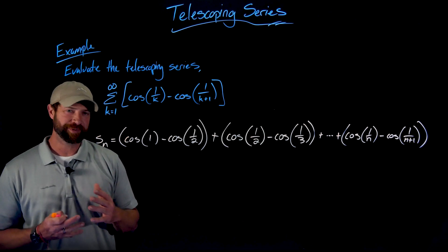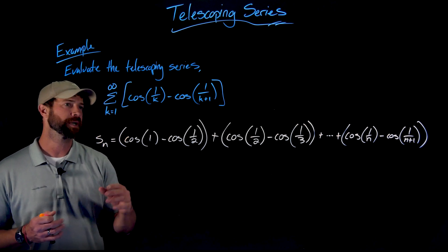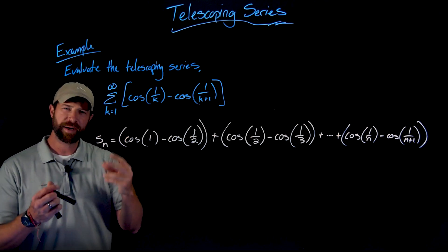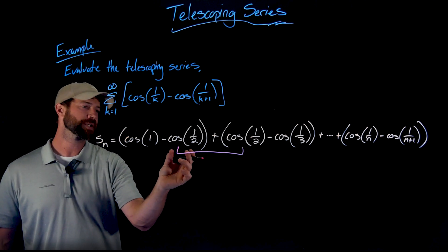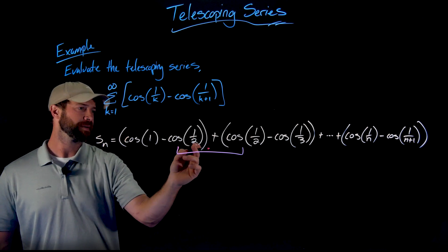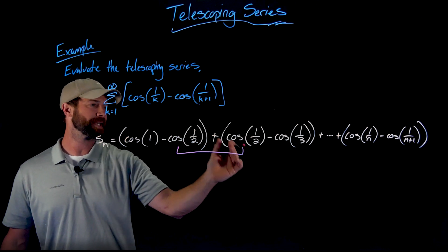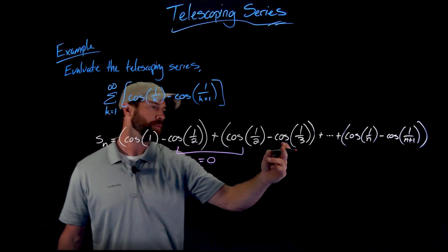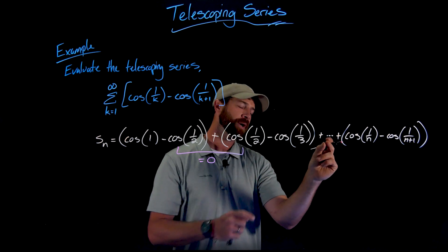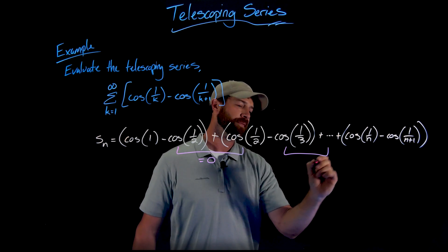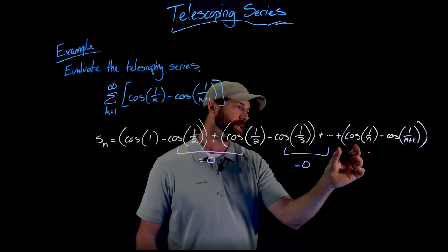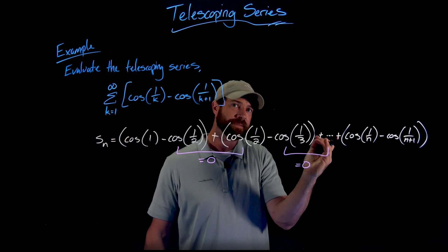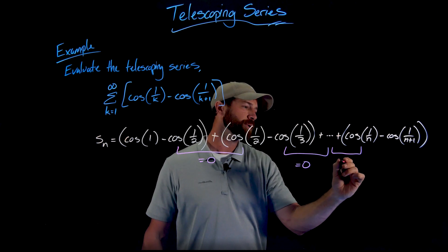I've only written out that many terms because I've run out of board space. But hopefully you can see what's going on. Because of the nature of cosine of one over k minus cosine of one over k plus one, you get pairs of terms where we have minus cosine of one half, but then the first term in the next part of the summation is exactly the same except positive — so these together equal zero. Then minus cosine of one third, but the first term of the next iteration is positive cosine of one third — that equals zero, all the way down to the nth term.